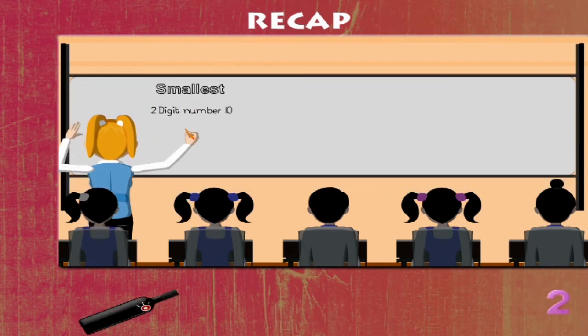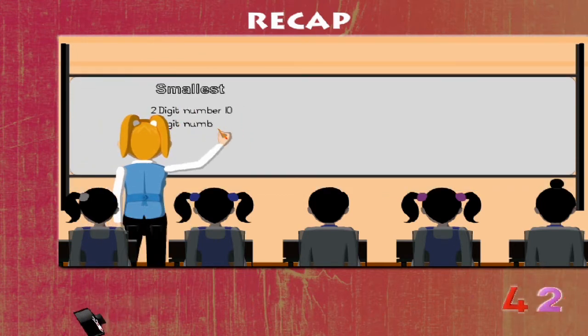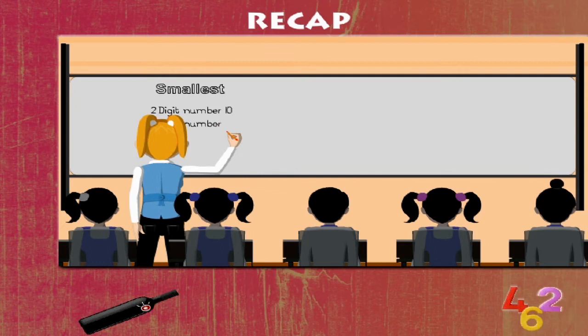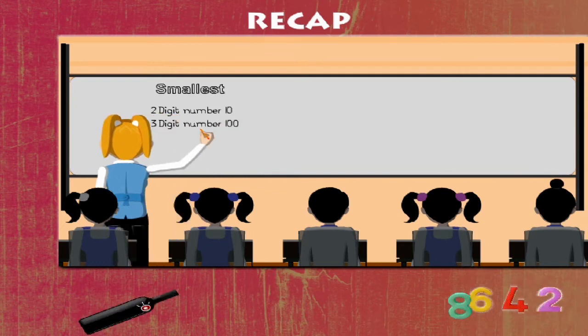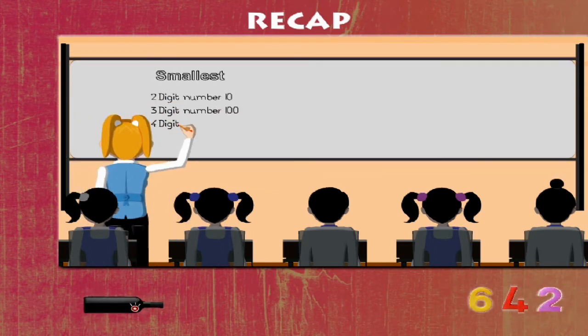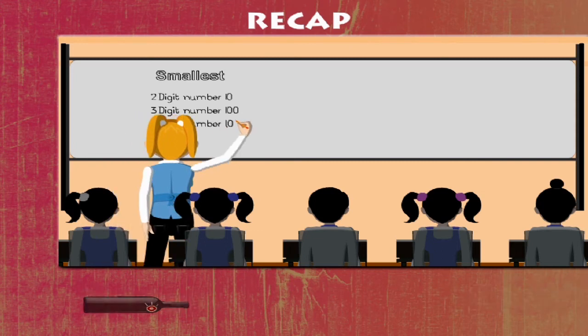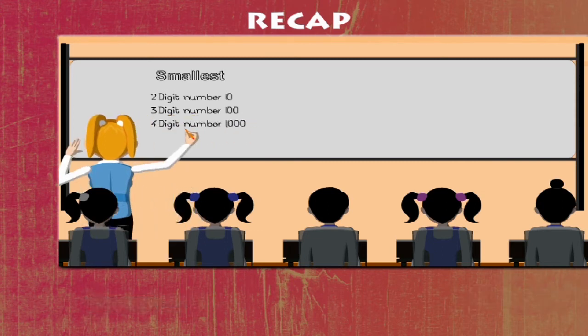That's right. The smallest three digit number is? Any answer? Yes, hundred. And now the four digit number. What do you say? It's one thousand.